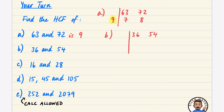For part b, we have 36 and 54. These are small numbers so I'll use the table method. I can spot they're both in the 6 times table: 6 × 6 = 36 and 54 ÷ 6 = 9.